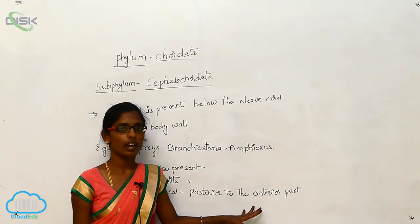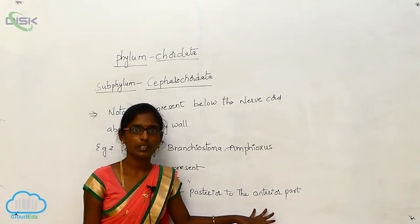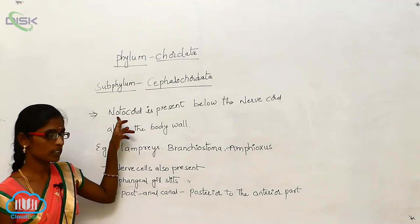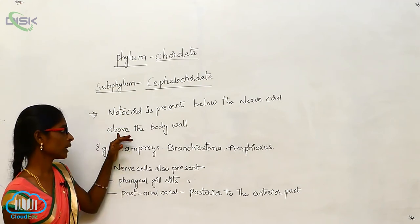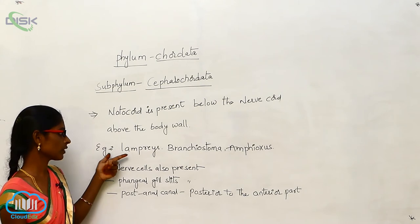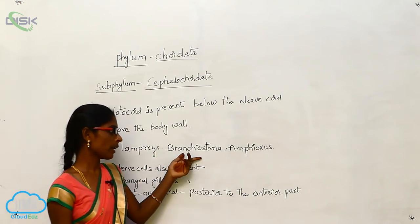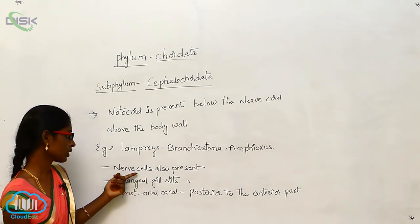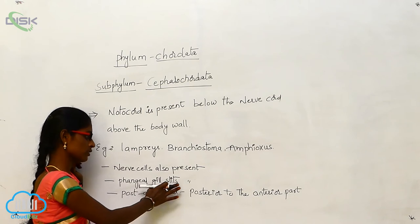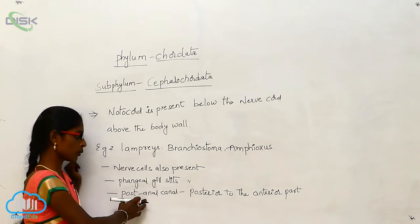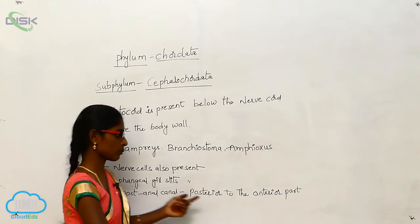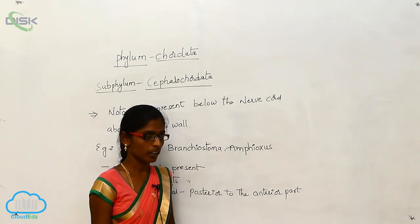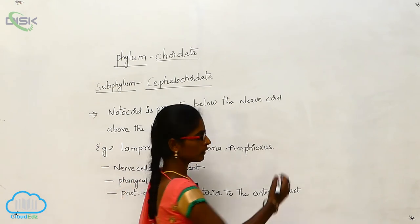To summarize Cephalocardata: the notochord is present below the nerve cord and above the body wall. Examples are Lamprey, Brachostoma, and Amphioxia. Important characters include nerve cells present, pharyngeal gill slits present, and the postanal canal extended from posterior to anterior.